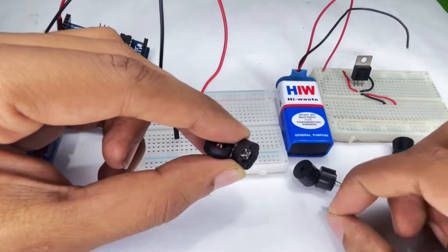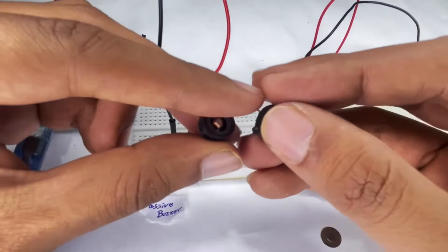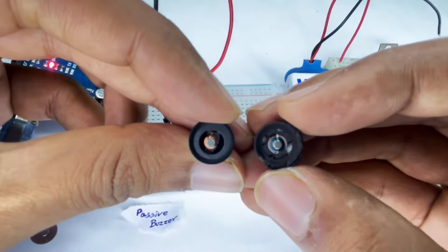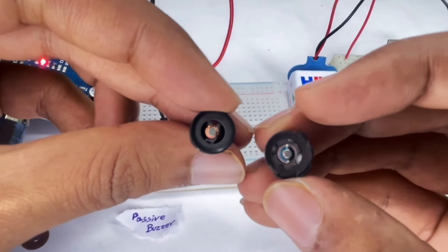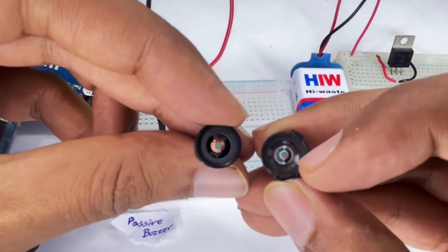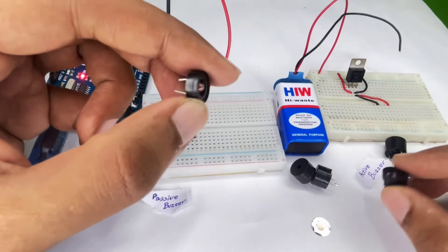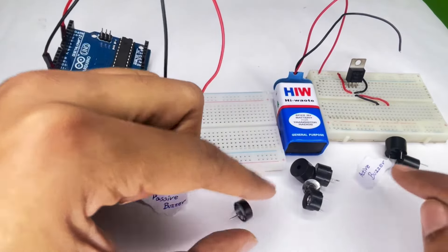Let me just remove it. So if you look inside, I wouldn't say there is much of a difference. You can see that in the passive buzzer we don't find this blue color layer, but in the active buzzer we can find this blue color layer.